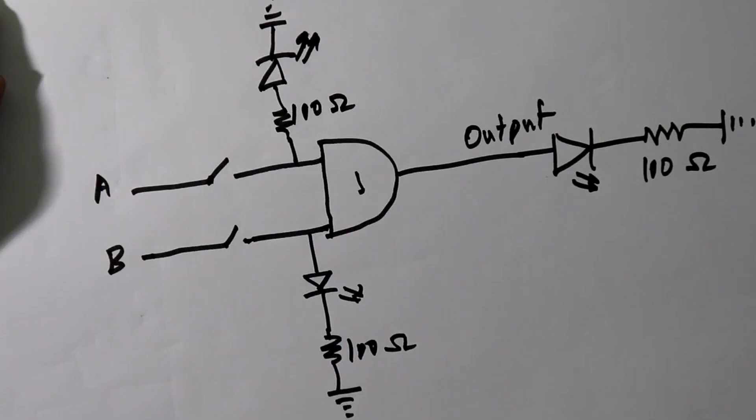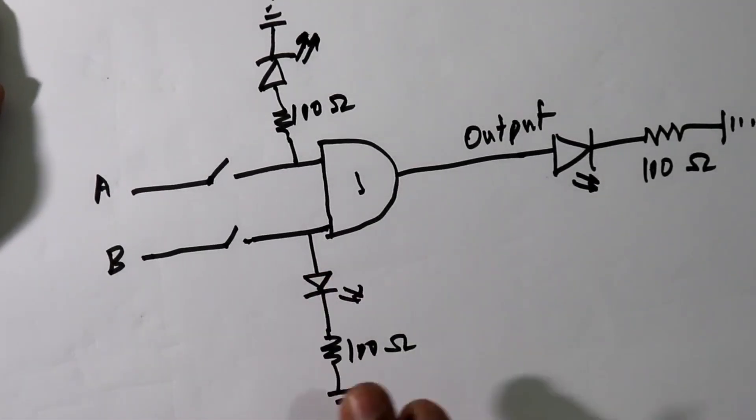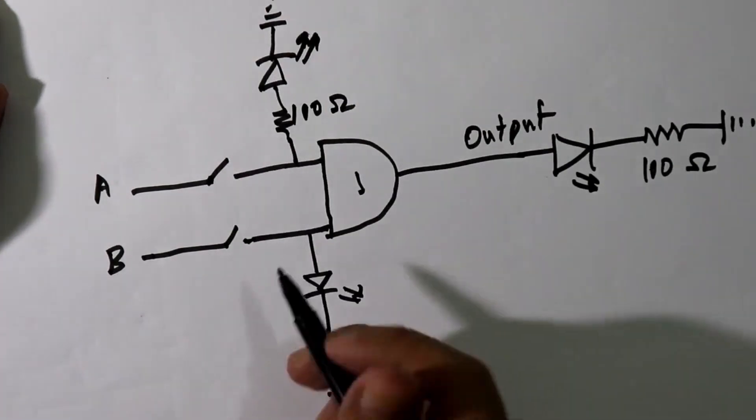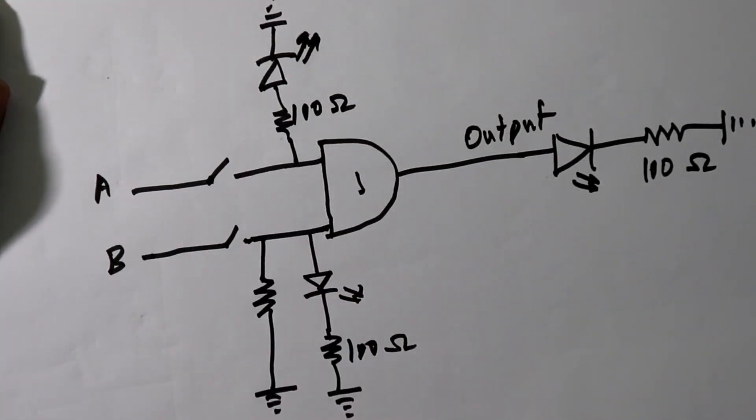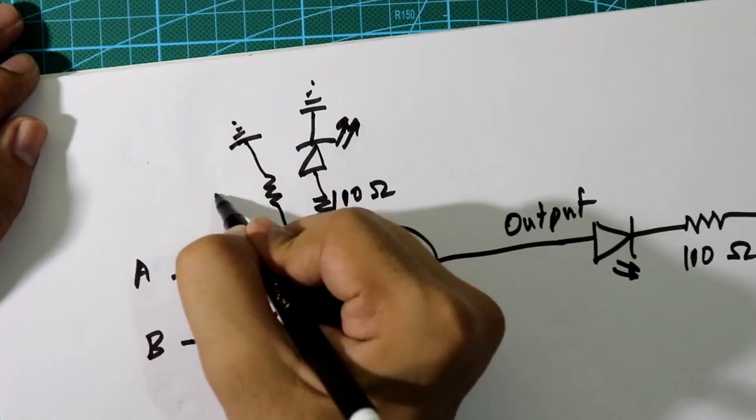100 ohms. And one more thing we have to do is we have to connect pull down resistor to both the inputs. And it is connected to the ground. And the value is 10 kilo ohms. Here also 10 kilo ohms.